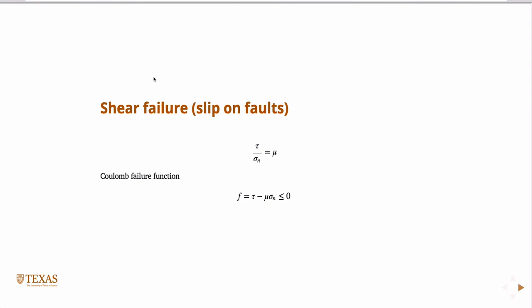If it's equal to zero, it means the fault is slipping. And it really can't be greater than zero. If it's greater than zero, it would imply that we've lost contact.